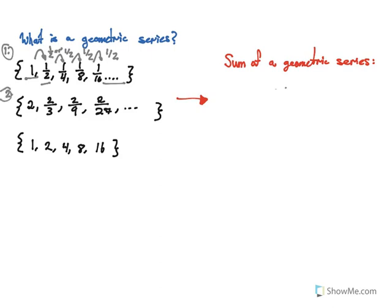In our second example, we can actually start with a different initial value, but the premise is the same. We're going to find some factor that takes us from two to two-thirds — in this case, one-third — and then this constant will always give us the successive value. So in the first case r equals one-half, and in the second case r equals one-third. However, we don't need to have an infinite series, nor does our r-value have to be less than one. It can be equal to one or greater than one. In one more example, we start with one, our r-value is two, so we go from two to four to eight and finally to sixteen. So in this case, r equals two.